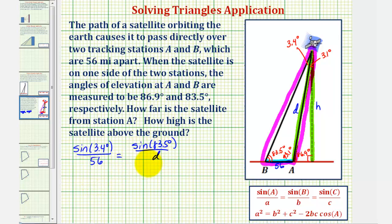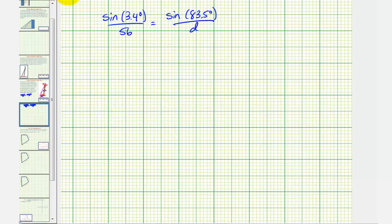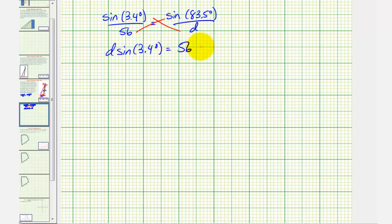This gives us an equation with one unknown, so now we can cross multiply and solve for D. Let's go ahead and do this on the next slide. We'd have D times sine 3.4 degrees must equal 56 times sine 83.5 degrees. So to solve for D, we'll divide both sides by sine 3.4 degrees. Notice how this simplifies to D, which is equal to this quotient, which we'll approximate using the calculator.